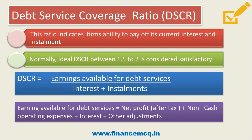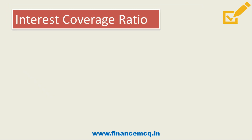The formula for DSCR is: Earnings Available for Debt Service divided by (Interest + Installment). Earnings Available for Debt Service is calculated as Net Profit After Tax plus non-cash operating expenses such as depreciation or amortization, plus interest cost, plus any other adjustments for loss or profit on sale of assets.